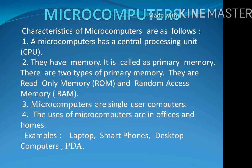The main characteristics of microcomputers are as follows. Number 1: A microcomputer has a central processing unit, in short CPU. Number 2: They have memory, called primary memory. There are 2 types of primary memory — read-only memory (ROM) and random access memory (RAM).